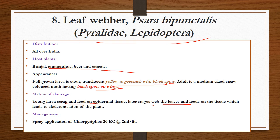Sara bipunctalis belongs to the family Pyralidae, order Lepidoptera, and is distributed all over India. It is also a major pest in case of amaranthus, beetroot, and carrots. Marks of identification: the full-grown caterpillar is greenish in color with black spots, and the adult is a medium-sized straw-colored moth having black spots on their wings. Coming to the nature of damage: larvae scrape the epidermal tissue, and in later stages, they web the leaves and feed on the tissue present inside the leaf web, which leads to skeletonized leaves. Spraying chemicals such as chlorpyrifos effectively controls the pest.